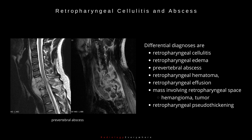Differential diagnoses include retropharyngeal cellulitis (same pathology but no abscess formation), retropharyngeal edema (hypoattenuation without a well-defined or enhancing rim), prevertebral abscess (usually secondary to discitis or osteomyelitis), retropharyngeal hematoma, retropharyngeal effusion secondary to acute calcific prevertebral tendinitis (no marginal enhancement, with calcification seen in the longus capitis and longus colli muscles), mass involving the retropharyngeal space such as hemangioma or tumor, and retropharyngeal pseudothickening especially in young children.